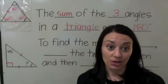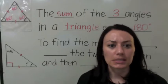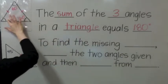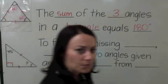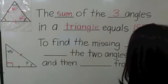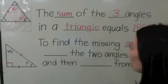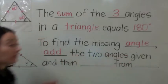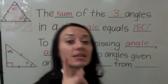But let's say you're given a triangle and you don't know what one of the angles is. If I took away 60 degrees and was just given this is 60 degrees and this is 60 degrees, how could I find that third missing angle? To find the missing angle, add the sum of the two angles that are given, then subtract — because the opposite of addition is subtraction.